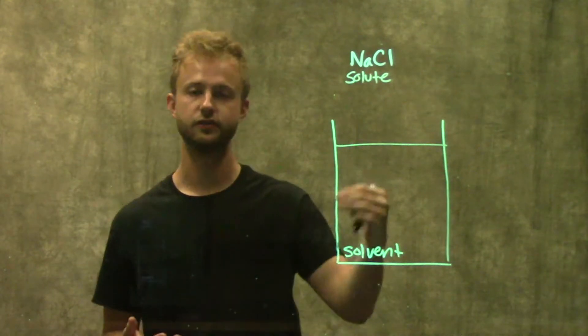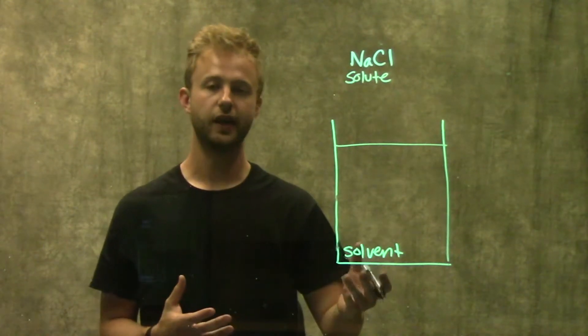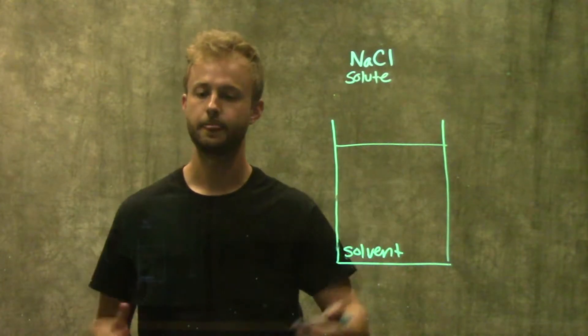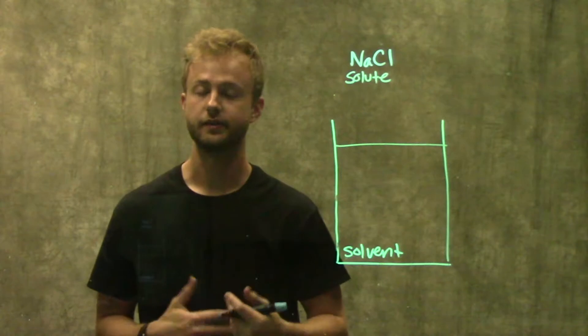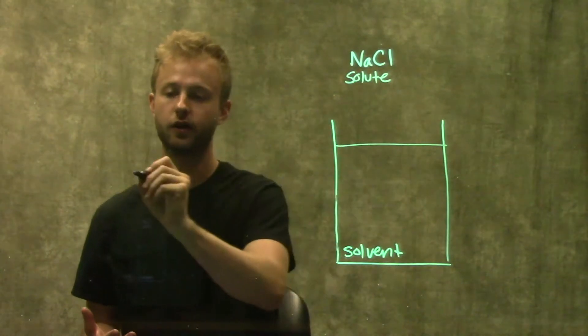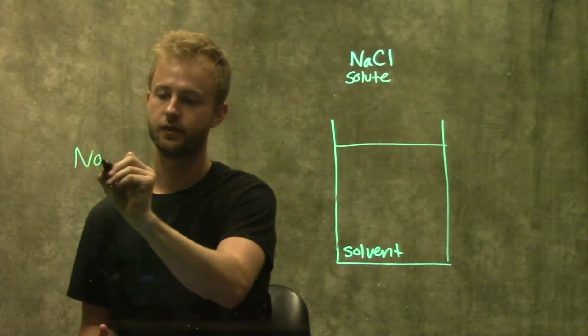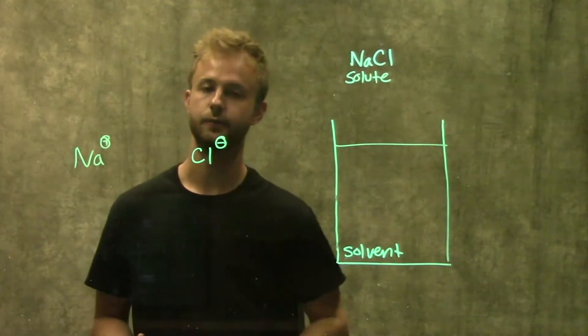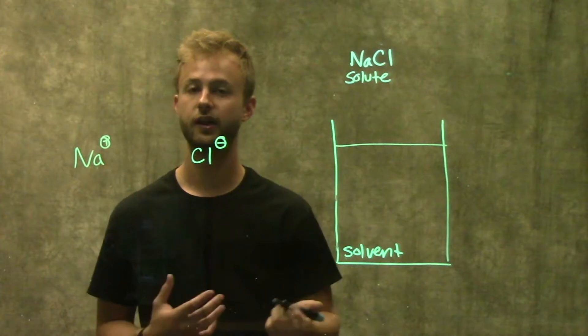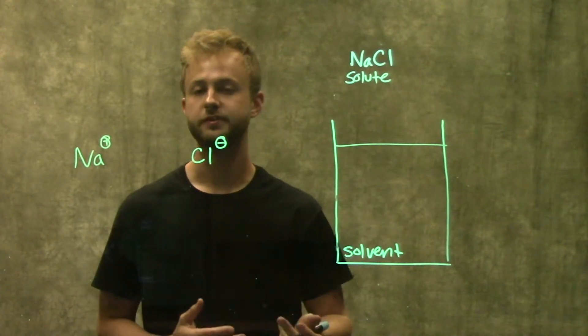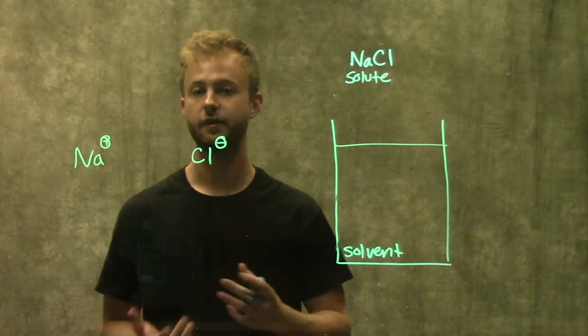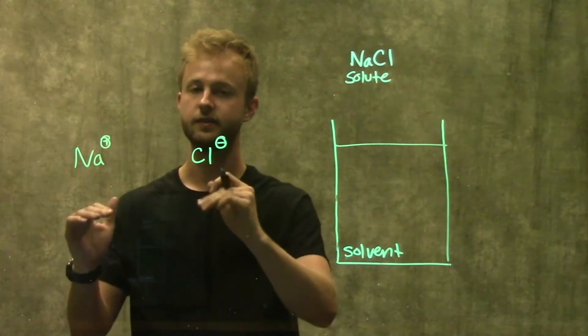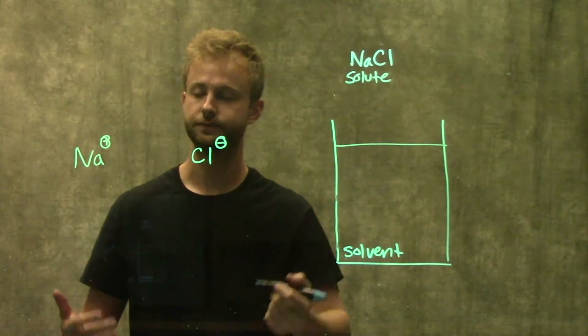Now that we understand these two parts of a solution, we can look at how water is actually able to dissolve something like sodium chloride. Sodium chloride is an ionic compound, which means that when we put it in water, it's going to split up into a sodium ion and a chlorine ion. We also know that water is a polar molecule, which means it has parts of partial positive and partial negative charges. We can use that property to help keep these two ions dissolved in solution.